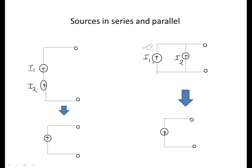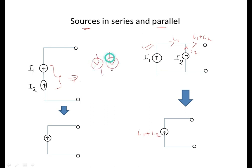If I1 and I2 are two current sources in parallel, and both flow in the same direction, the equivalent is I1 + I2. For current sources in series: just as voltage sources cannot be in parallel unless equal, current sources cannot be in series unless both are equal. If equal, the equivalent current is I1 = I2.